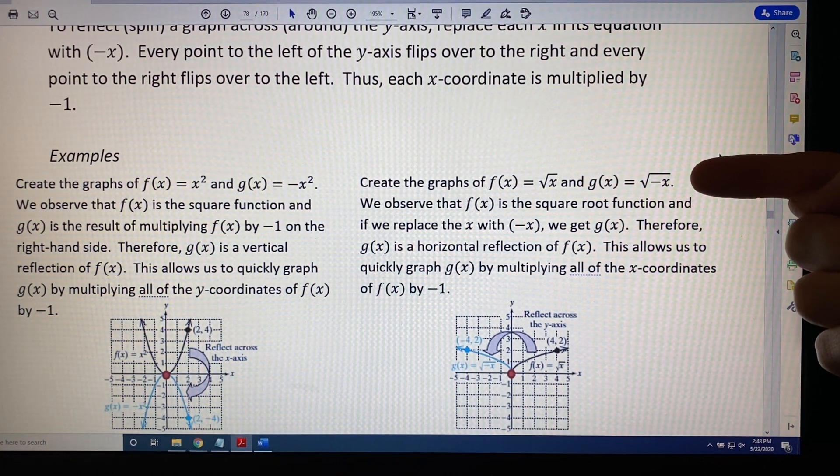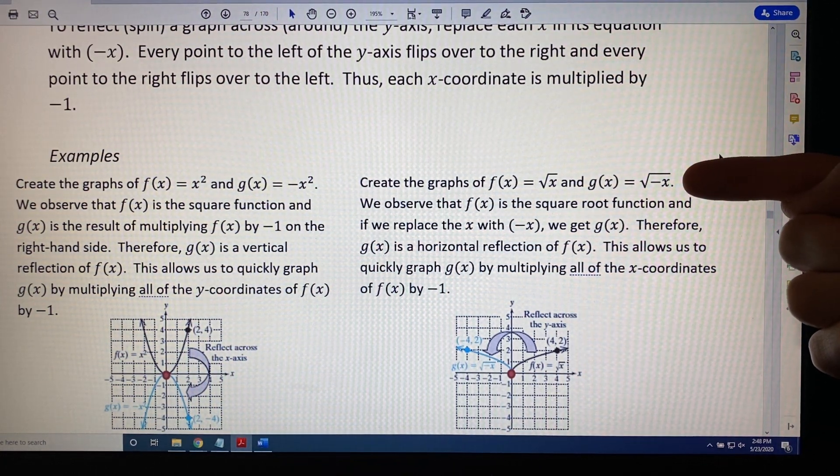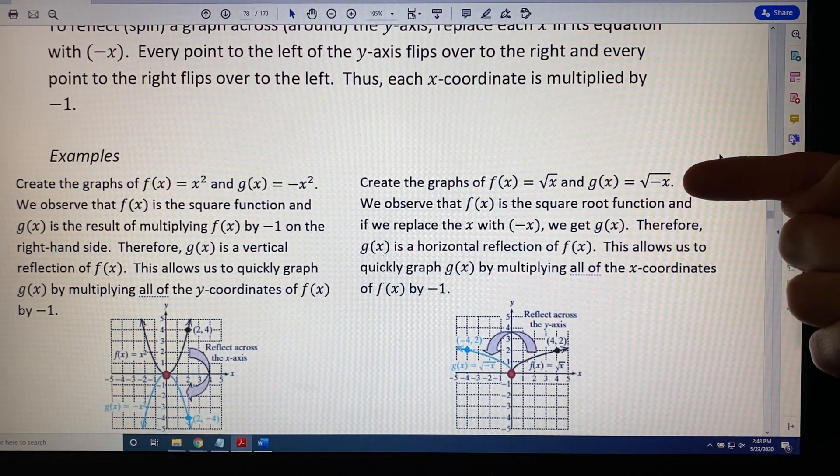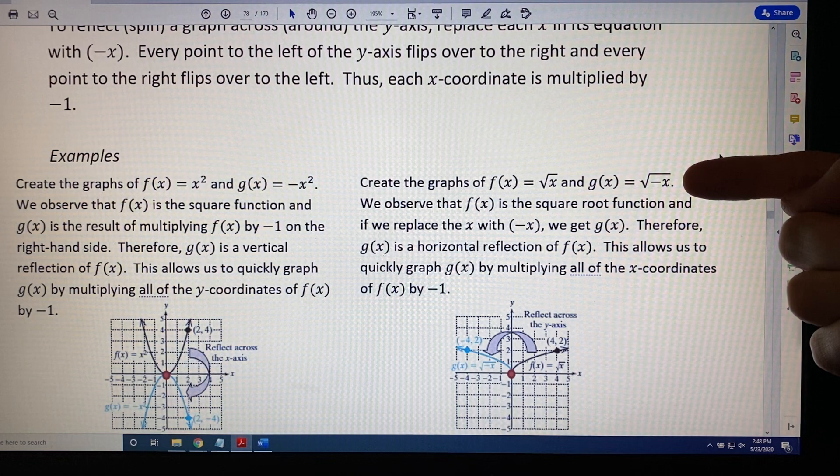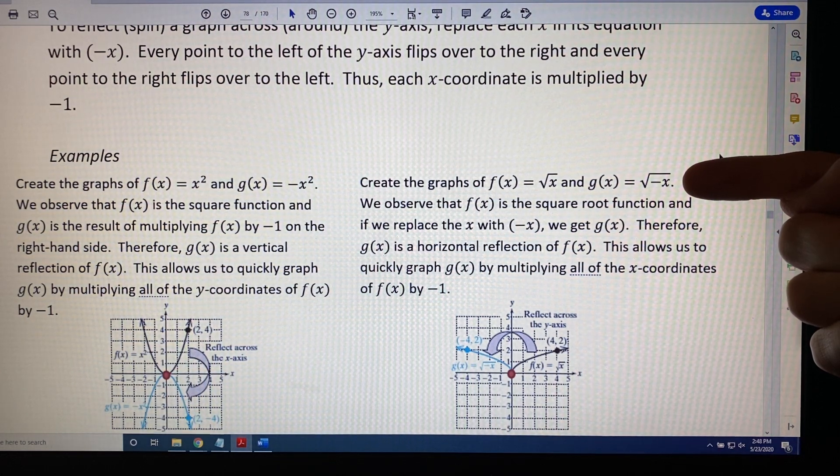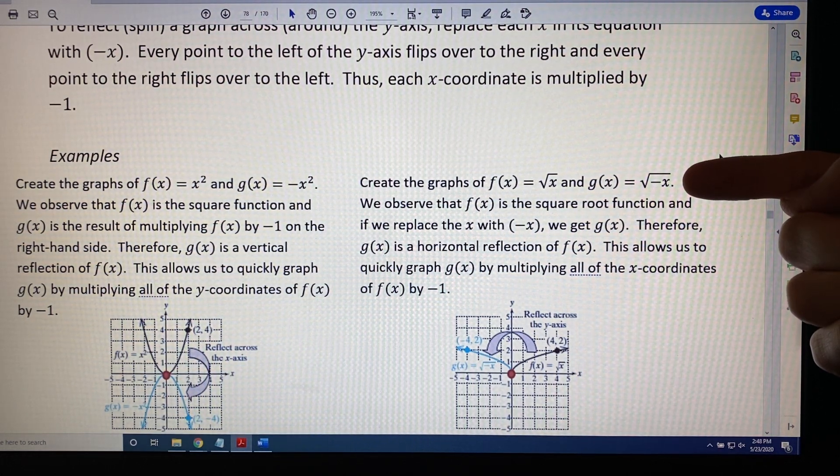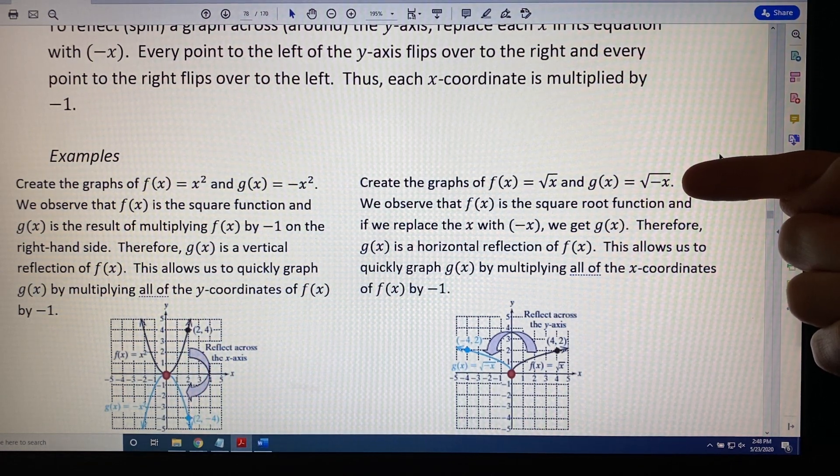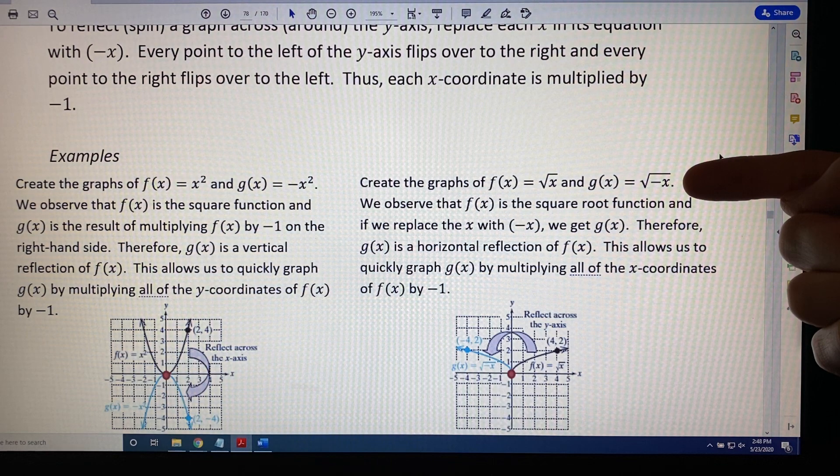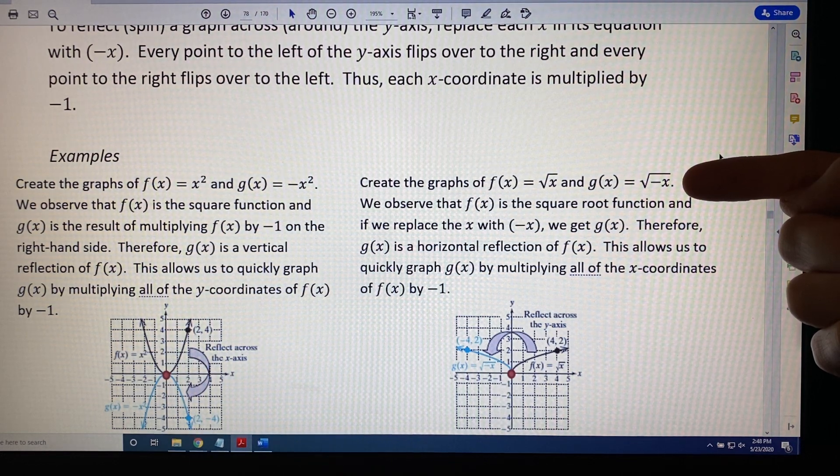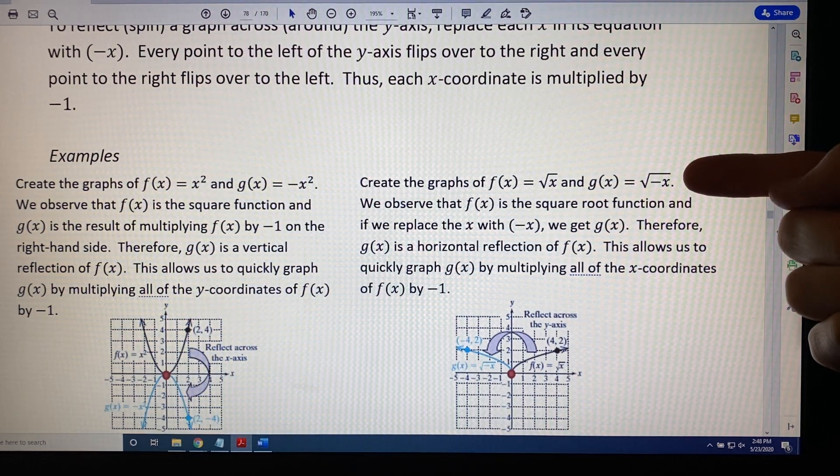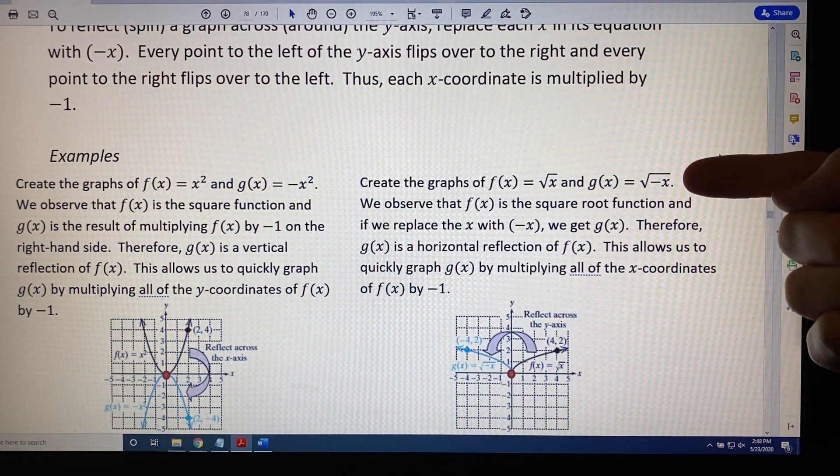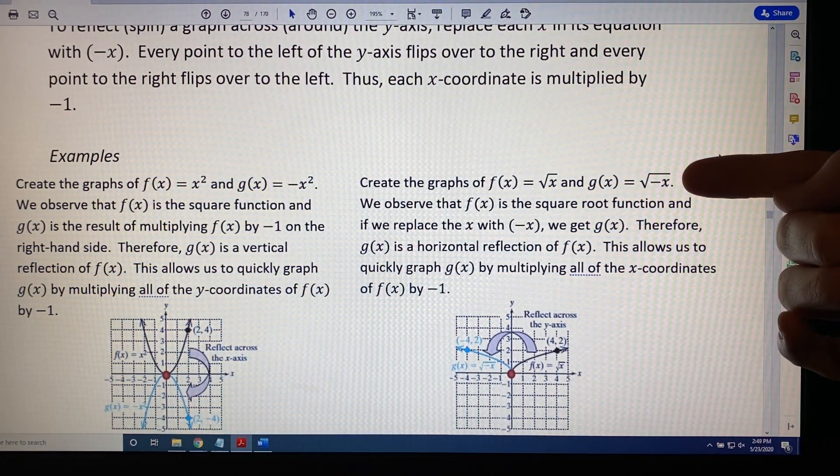Are you allowed to have a negative under a square root? And the answer is yes, as long as there's also a variable in there. For example, if the value of x happened to be -4, then you would have two negatives, and negative negative 4 is positive 4, which you can take the square root of and get 2. All right, so now that we've addressed that issue, let's go ahead and work on this problem.